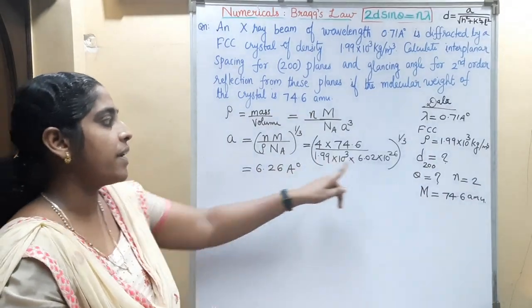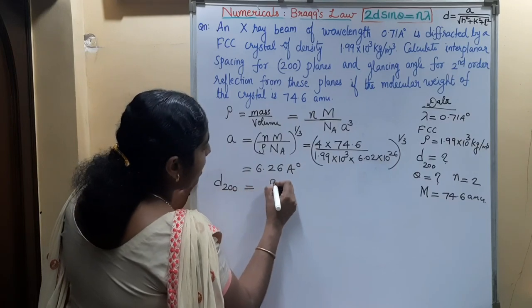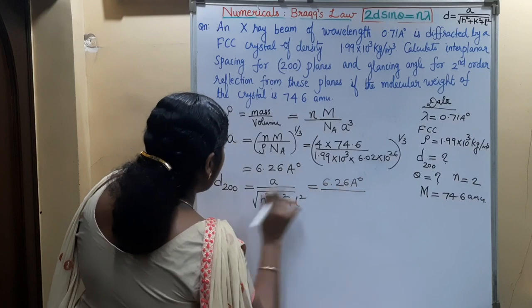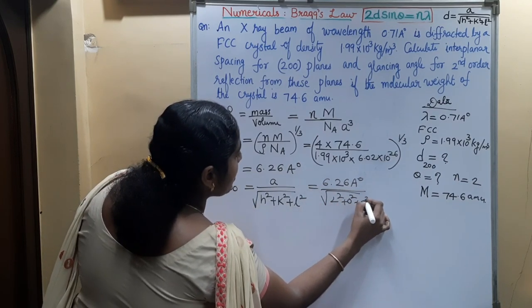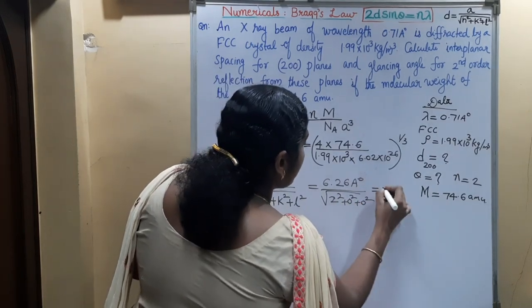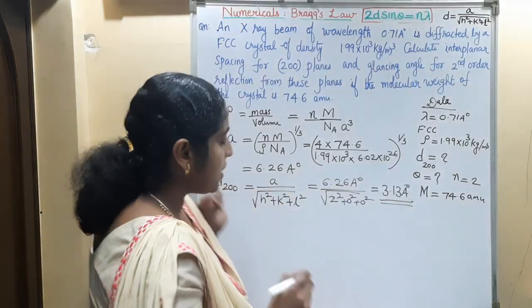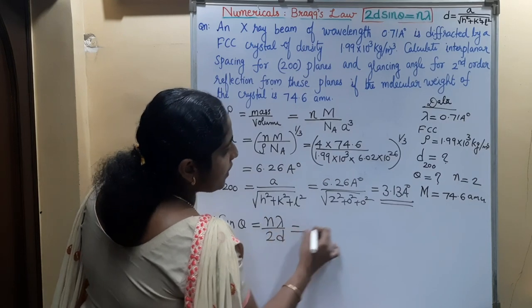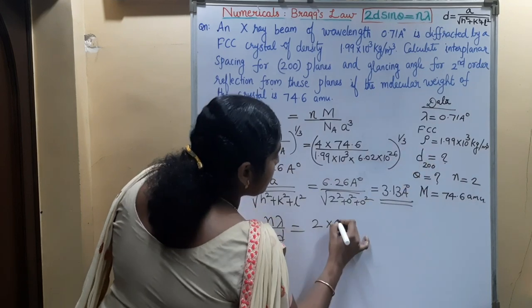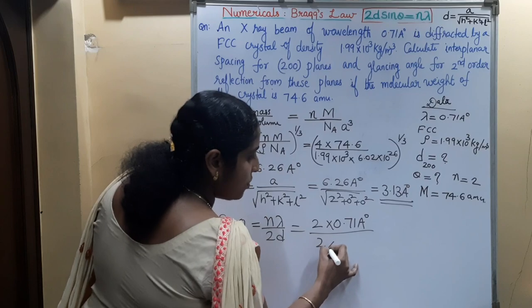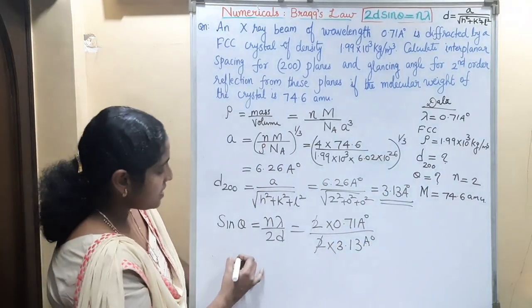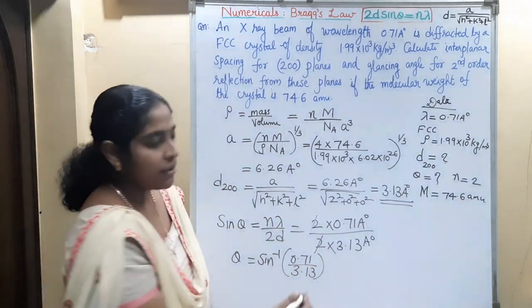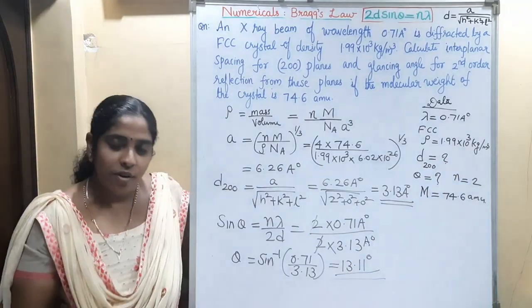With lattice constant A equals 6.26 Angstroms, the interplanar spacing D for (2,0,0) planes equals A divided by root of 2 squared plus 0 squared plus 0 squared, that is 6.26 Angstroms divided by 2, giving 3.13 Angstroms. For the glancing angle at second order (N equals 2), sin theta equals N lambda divided by 2D, that is 2 into 0.71 Angstroms divided by 2 into 3.13 Angstroms, giving 0.2269. Therefore theta equals sine inverse of 0.71 divided by 3.13, which is 13.11 degrees. Try more questions — all the best!